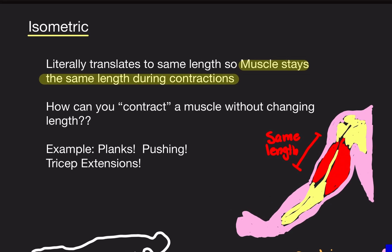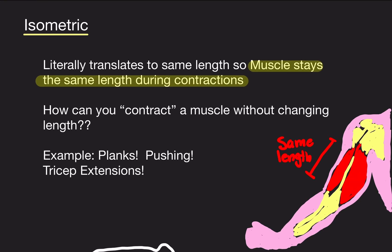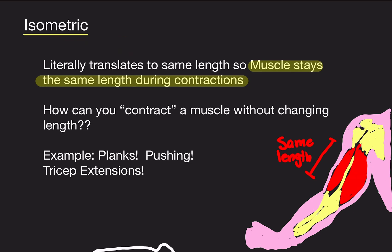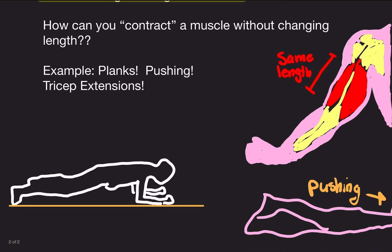On the other hand, an isometric contraction is when the muscle stays the same length during the contraction. 'Iso' means same, and 'metric' means length — so it's literally the same length. You're probably wondering: how can you contract a muscle without changing the length? That sounds impossible, right? But it actually is possible.